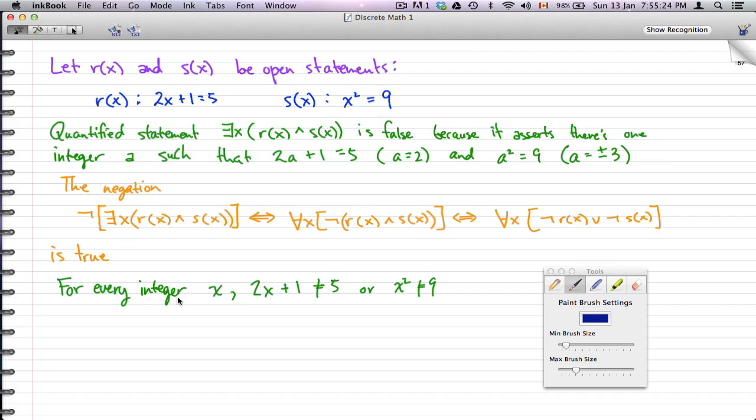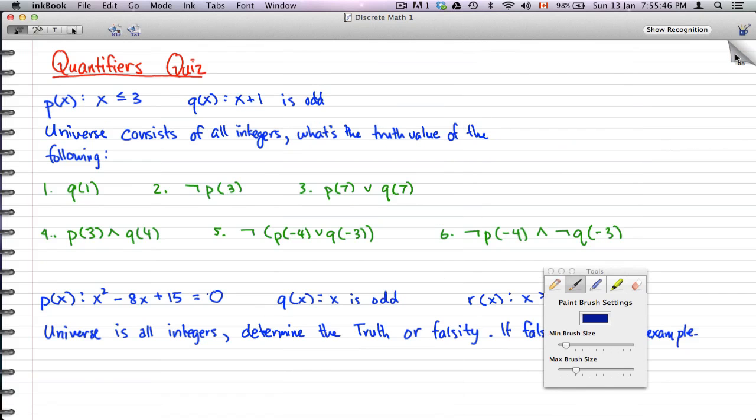The difference here is that this is a true statement because there is no x such that it makes both statements true at the same time. But there are integers that can make either not r(x) true or not s(x) true. That's the end of this example.